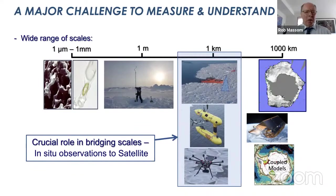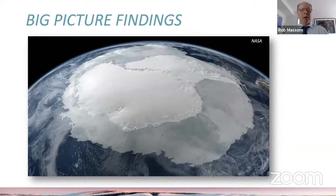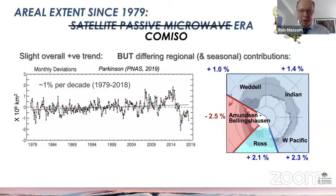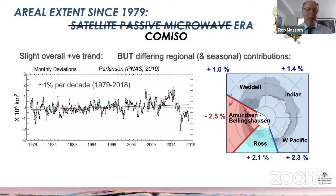Coming back to the large-scale picture — what are the recent findings? This is the aerial extent of sea ice since 1979, really the satellite passive microwave era — what I'd like to rename the Camiso era. This is a plot from Claire's wonderful PNAS paper of 2019, showing a modest increase over the period 1979 to 2018 of about 1% per decade in sea ice overall around Antarctica. Joey has also published a tremendous paper in Journal of Climate in 2017 showing similar patterns.